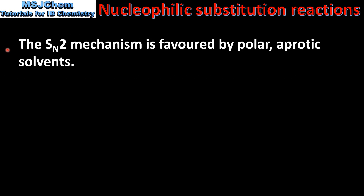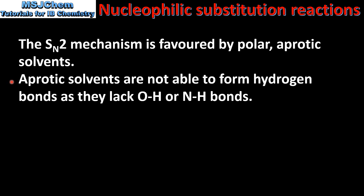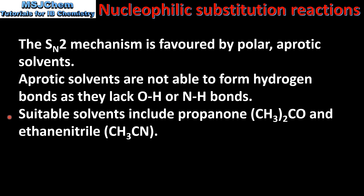Finally, we have the choice of solvent. The SN2 mechanism is favored by polar aprotic solvents. Aprotic solvents are not able to form hydrogen bonds as they lack O-H or N-H bonds. Suitable solvents include propanone and ethanenitrile.